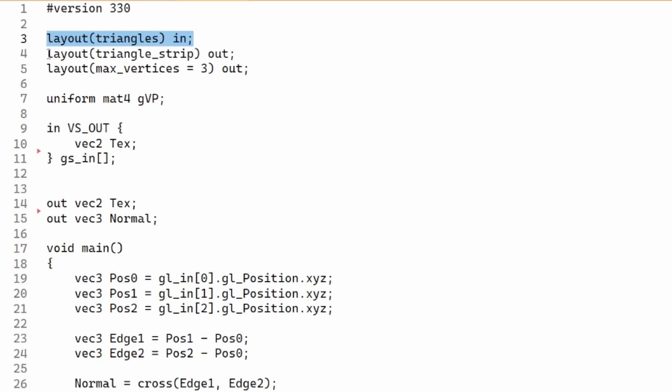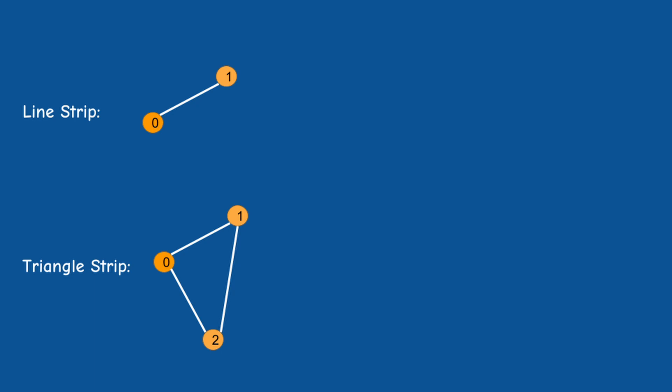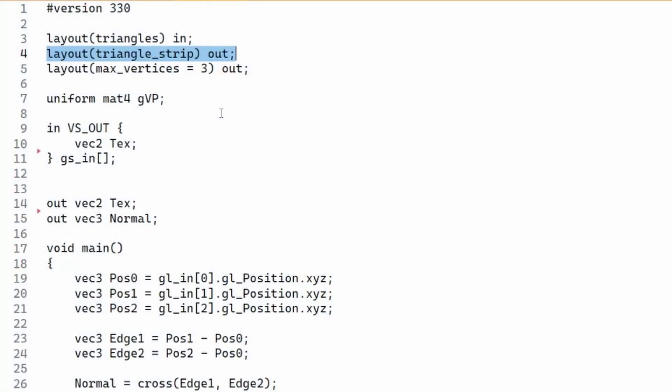Next we have the output primitive type. This is limited to points, line strip, or triangle strip. The idea behind the two strip topologies is that the first two or three vertices create a line or a triangle, and then the next vertex joins the last one or two vertices to create a new line or a triangle. In this demo we just need to output a single triangle for each input triangle, so we use the triangle strip.